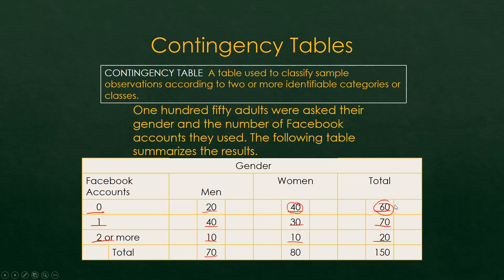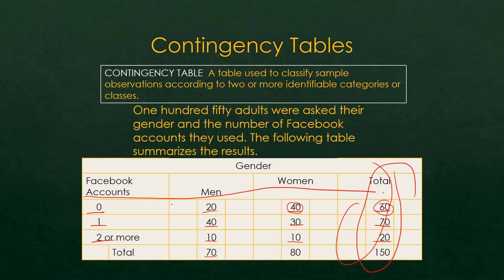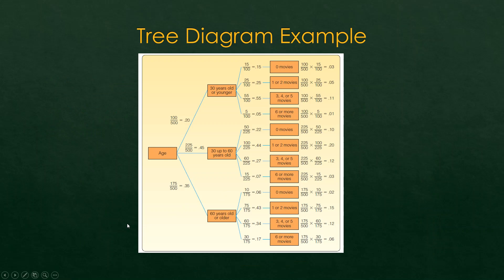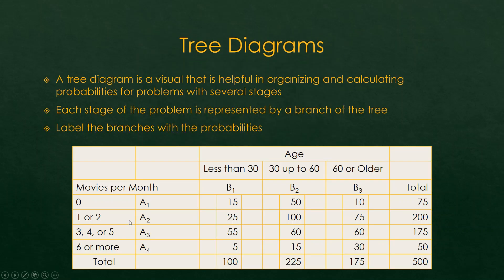So that is a contingency table — you can look at any one of the columns or any one of the rows to determine the probability of occurrences. Now, this right here is a tree diagram, and we are going to explore how the tree diagram works. A tree diagram is a visual that is helpful in organizing and calculating probabilities for problems with several stages. There will often be times when you want to determine probability and there's a lot that factors into it. Each stage of the problem is represented by a branch of the tree, and you label the branches with the probability.